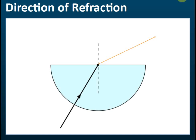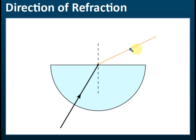For a semi-circular prism, if the light ray is heading towards the center of curvature, it travels in the same direction as the normal, so it is not refracted entering the curved surface. But when it reaches the flat side and moves from denser to less dense, it will be refracted away from the normal.